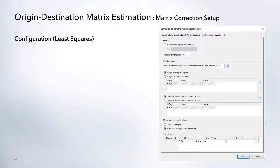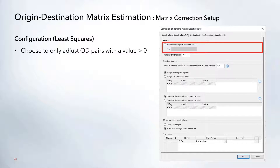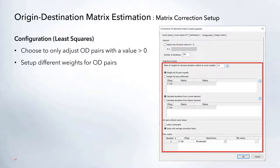On the configuration tab, least squares and T-flow fuzzy have a few different options. One option common to both is locking down OD pairs to be updated — you can create a matrix of zeros and ones where a value of one means that OD pair can be adjusted. This is useful if you want to keep certain OD values in the matrix fixed by setting them to zero. For least squares specifically, you can also set different weights for individual OD pairs, placing more emphasis on particular pairs as needed.